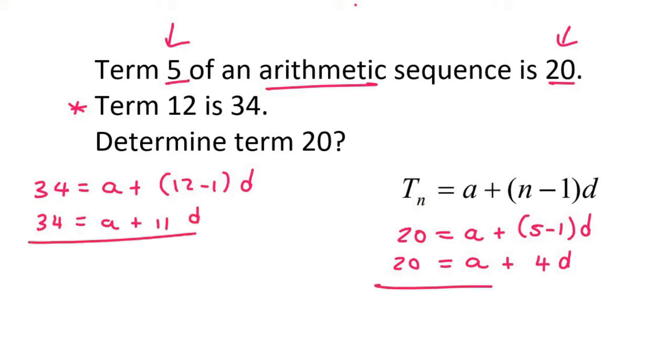Now what we do is we take this equation and this equation, and we simply solve simultaneously. Now, you can do this in so many different ways. So if you don't follow what I'm doing, try it your own way. Just make sure you get to the same answer.